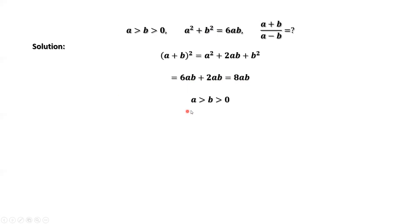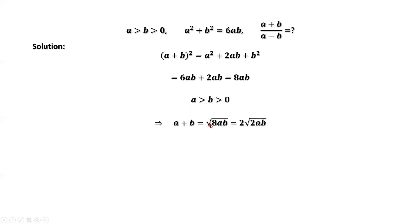Both A and B are positive, so taking square roots on both sides of this equation, we have A plus B equals the square root of 8 times A times B, which is 2 times the square root of 2AB.